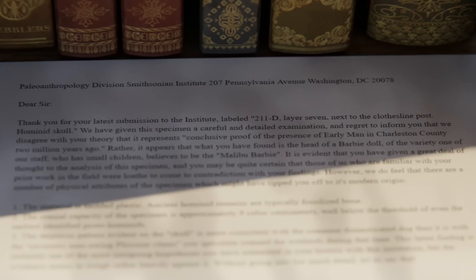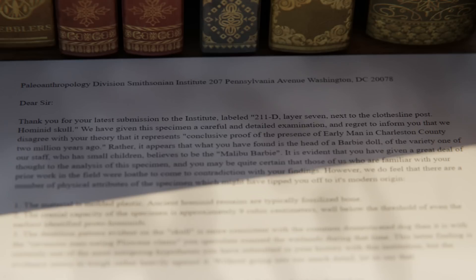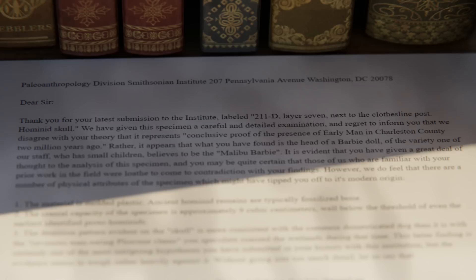I'm sure that would never happen. The best Roger could hope for is the equivalent of this sadly fictional letter from the Smithsonian. Paleoanthropology Division, Smithsonian Institute, Washington, D.C. Dear Sir, thank you for your latest submission to the institute labeled 211-D, layer 7, next to the clothesline post, hominid skull. We have given this specimen a careful and detailed examination and regret to inform you that we disagree with your theory that it represents conclusive proof of the presence of early man in Charleston County 2 million years ago.